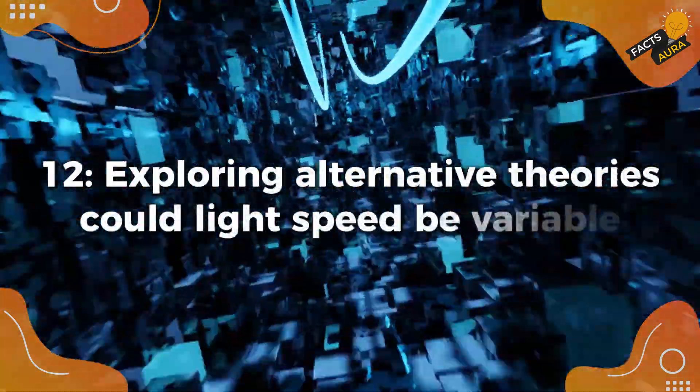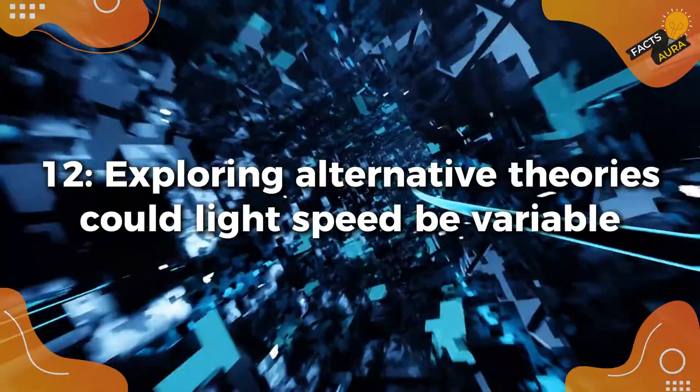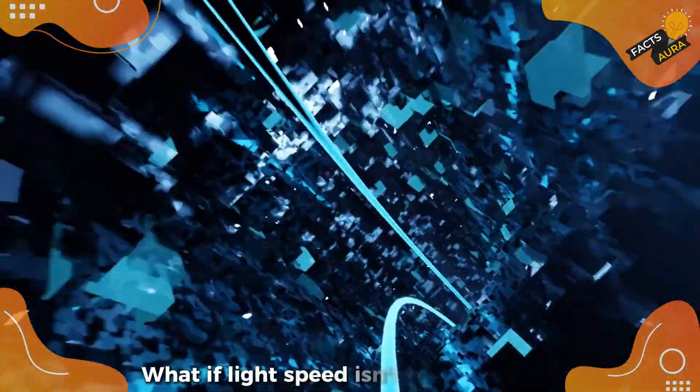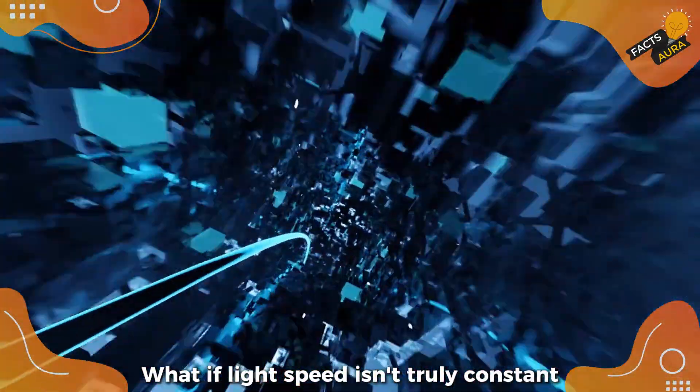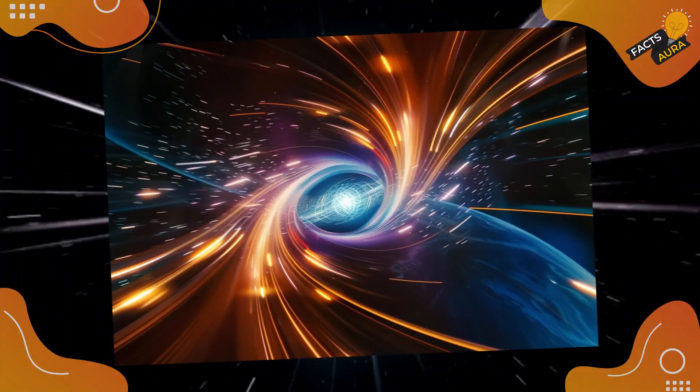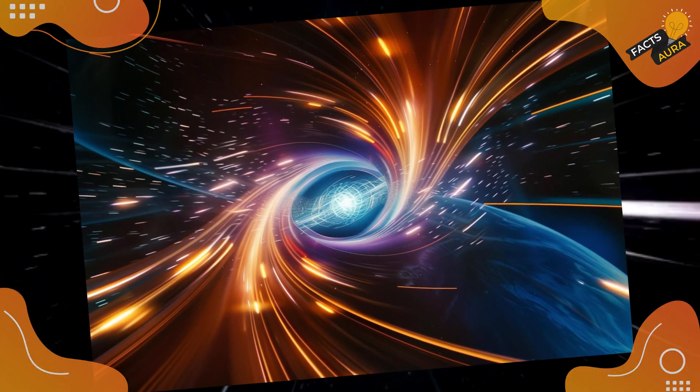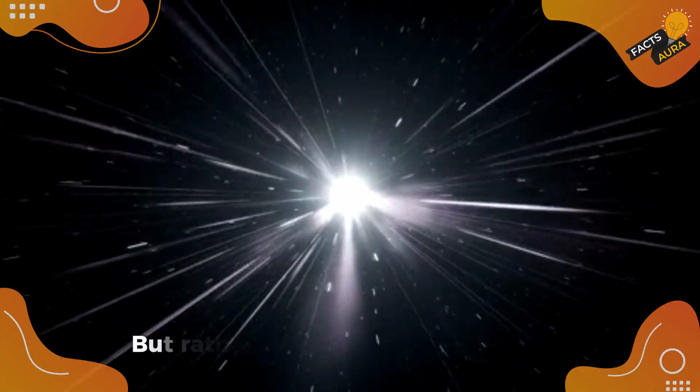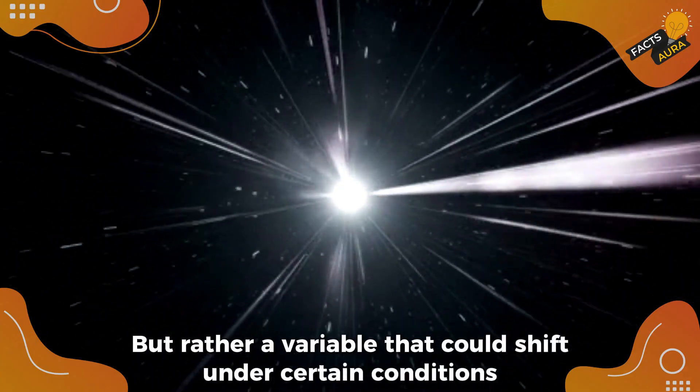Exploring alternative theories: could light speed be variable? What if light speed isn't truly constant? Some physicists have proposed that the speed of light may not be an absolute unchanging value, but rather a variable that could shift under certain conditions.